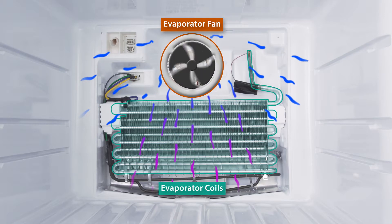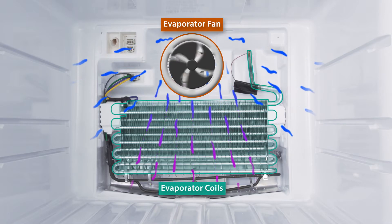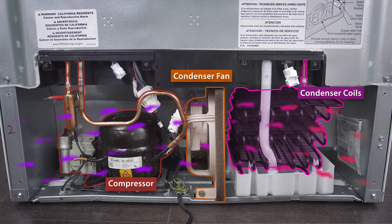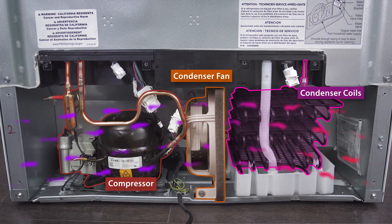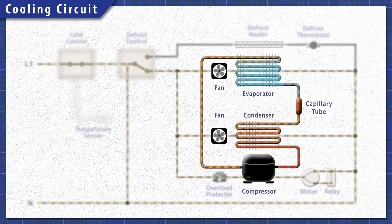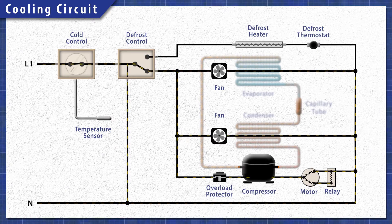In the freezer, heat is extracted by the evaporator coils and is released through the condenser coils behind the refrigerator. This process continues until the set temperature is reached.